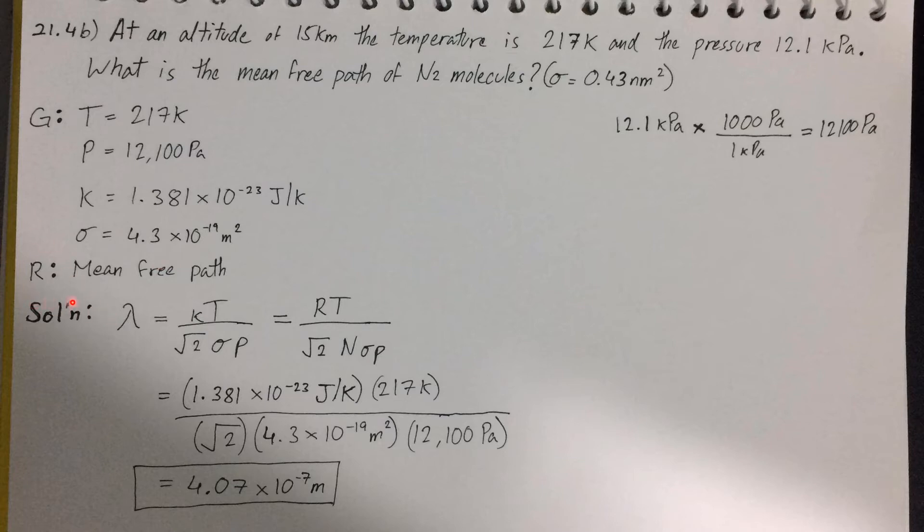So the question requires the mean free path. And to solve for this, there are two formulas that you can use. Lambda is equal to kT, all over square root of 2, times sigma, times P. This is the first formula.